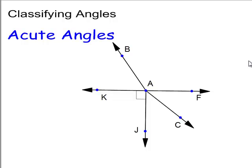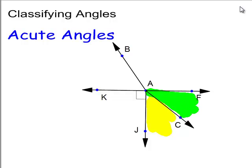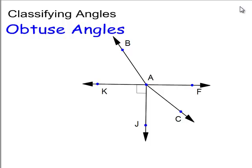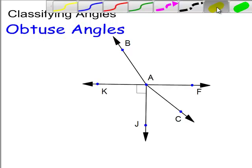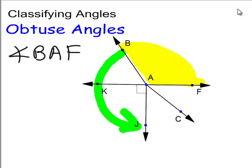These are acute angles — I'll color them in. This is an acute angle, and this one is also an acute angle, and they're also adjacent angles. Acute angles are angles that measure less than 90 degrees, so angle JAC is acute and angle FAC is acute. Obtuse angles are angles greater than 90 degrees — that's going to be this angle right here, angle BAF. And from here to here we could also say angle BAJ.